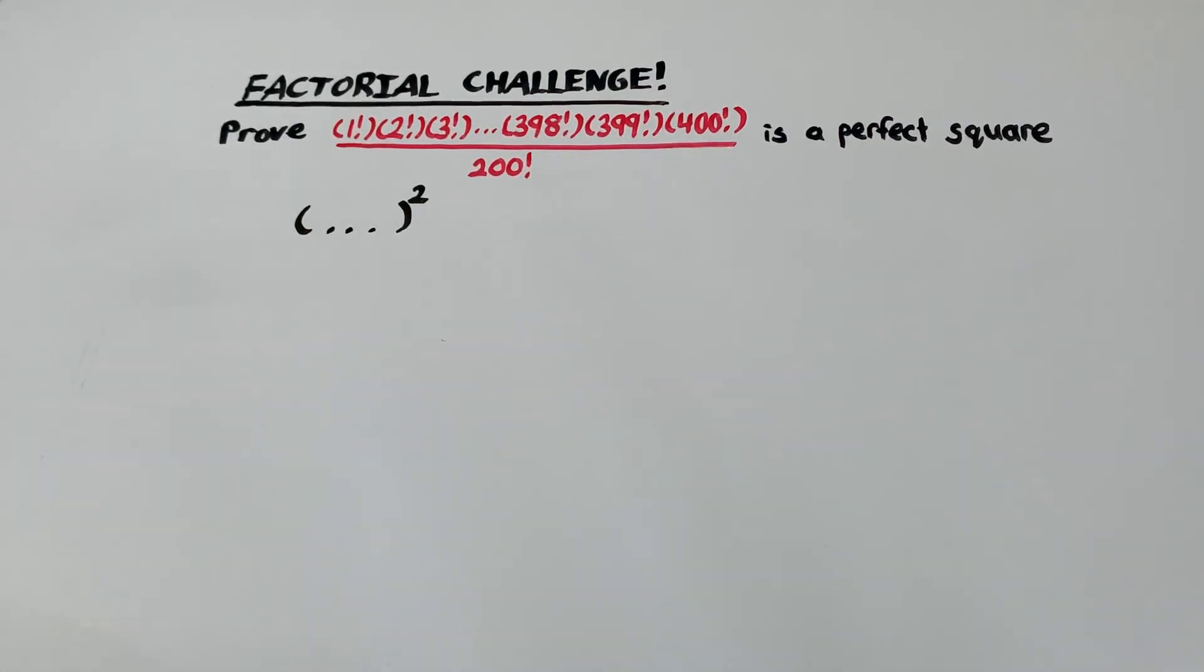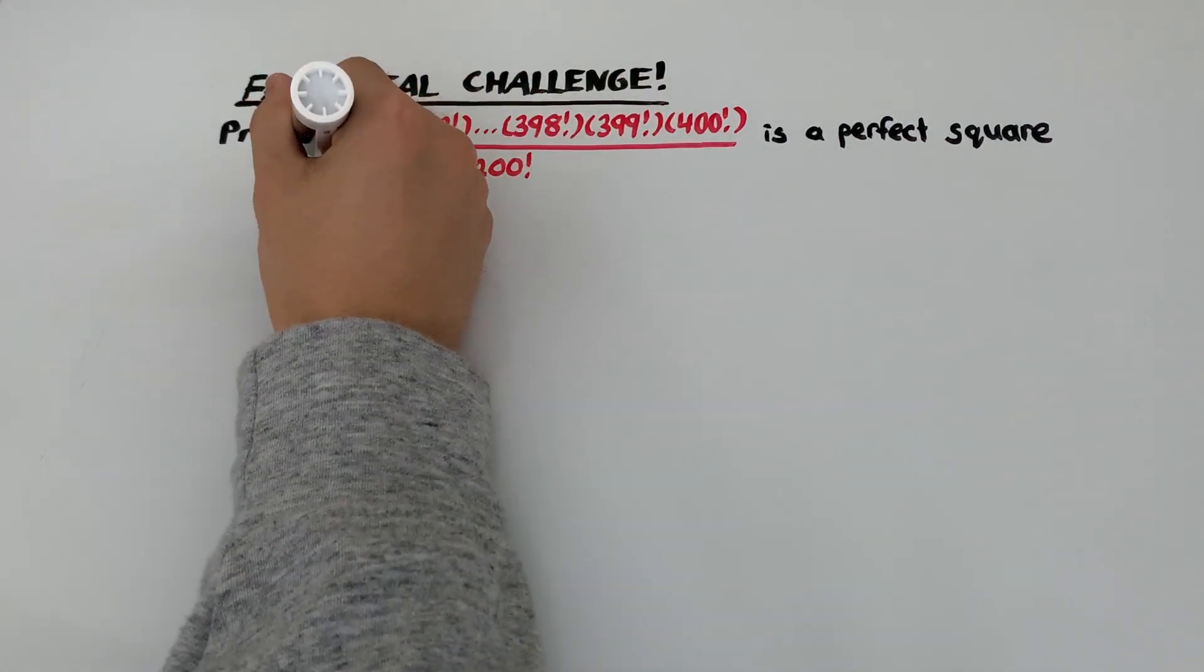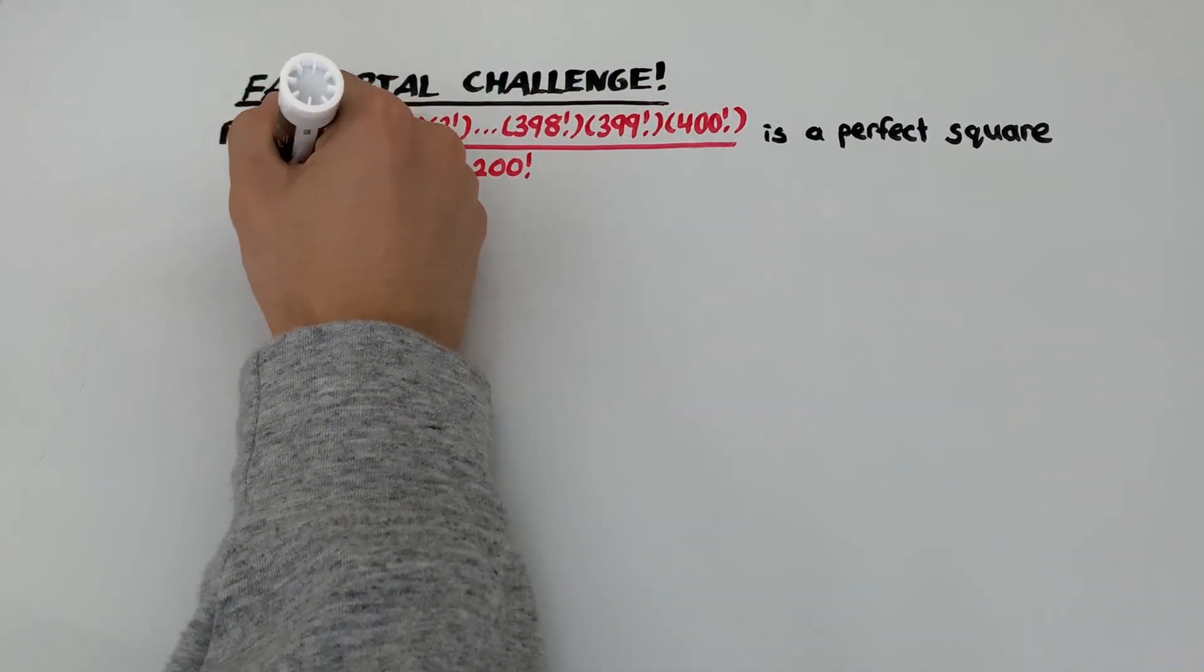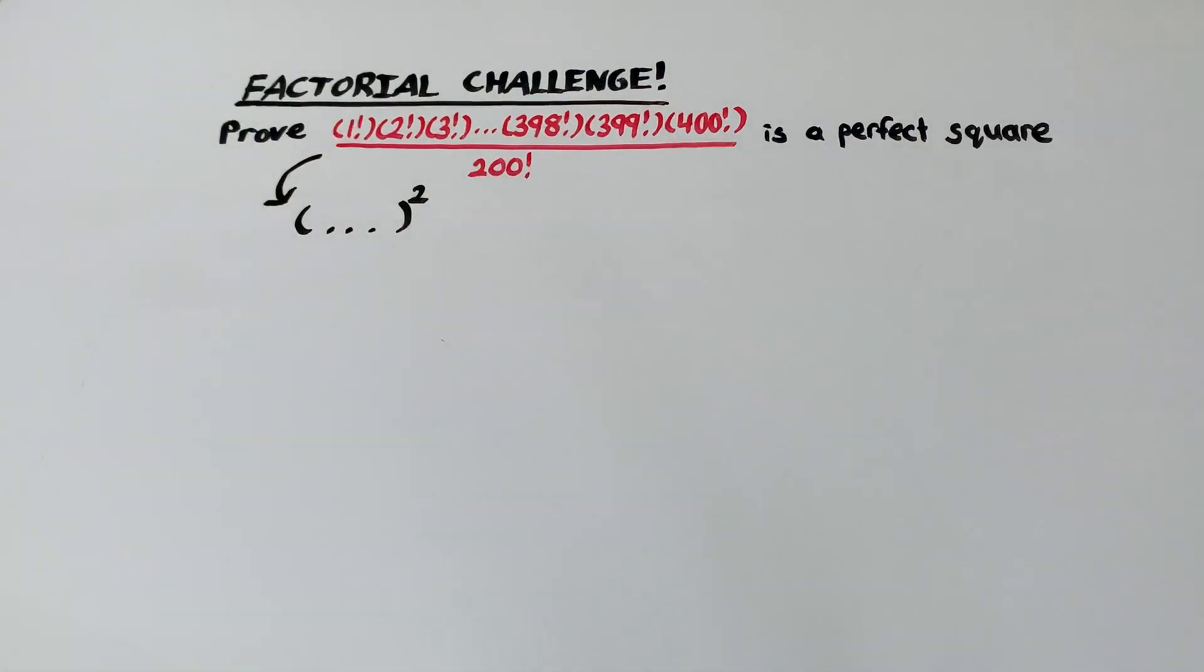We're going to try and show that this number can be written like this. Now before doing any work, we need a strategy. So what makes perfect squares so special? Well the definition of a perfect square is that they can be written as some number times itself.